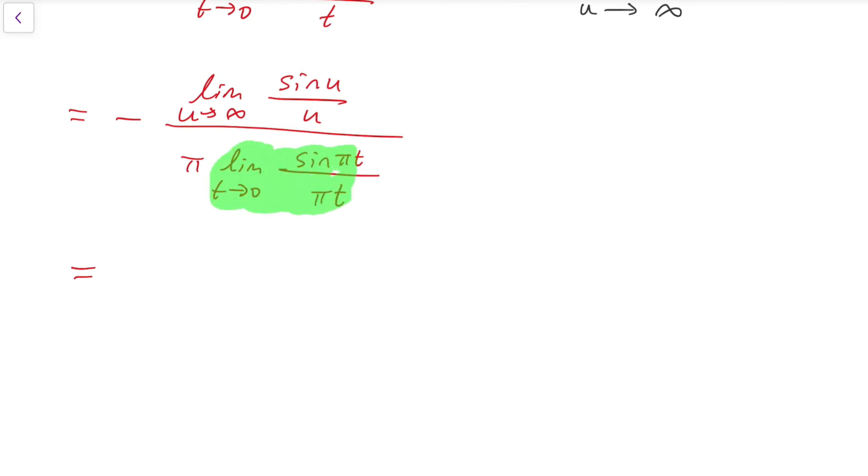This limit is well known because it's of the form sine of some expression all divided by the same expression, and this πt now tends to 0 since t tends to 0. So the green part actually tends to 1. For the denominator, we have π times 1. While for the top, notice that we don't actually need any special tools.